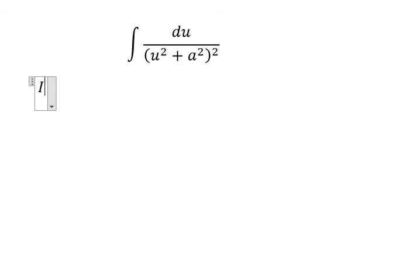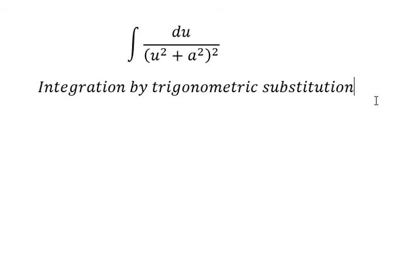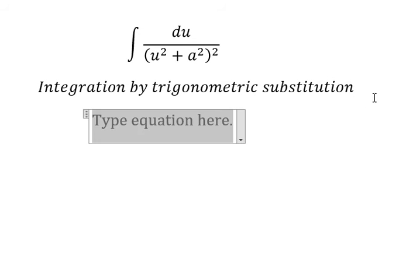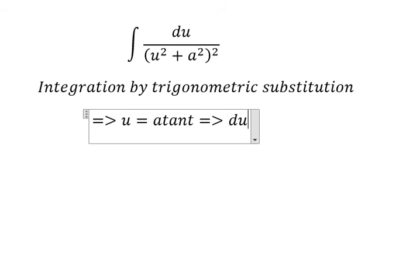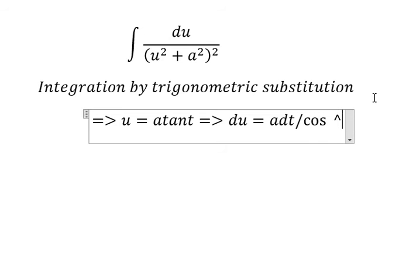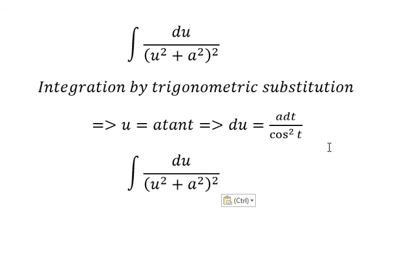In this situation, we can use integration by trigonometric substitution. We have u equals a times tan(t). So we get du equals a dt over cos squared t, and u squared will change to a times tan(t).